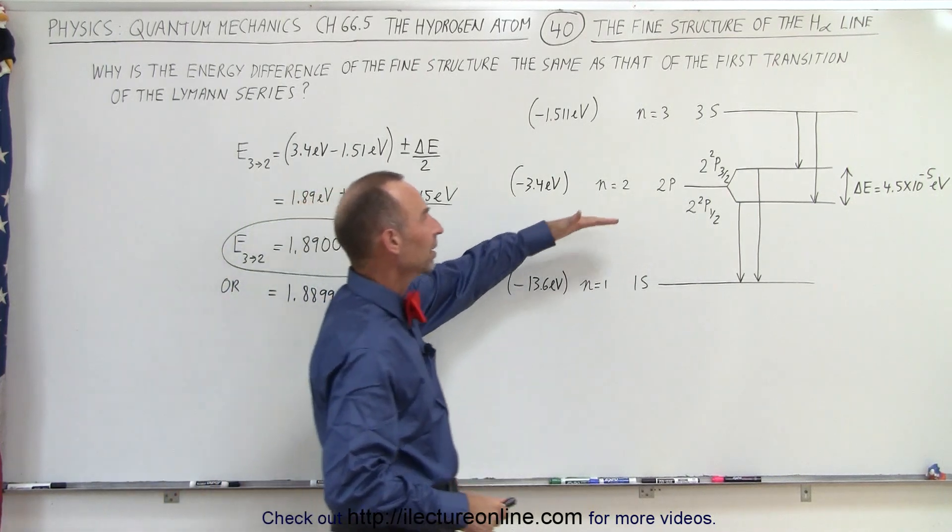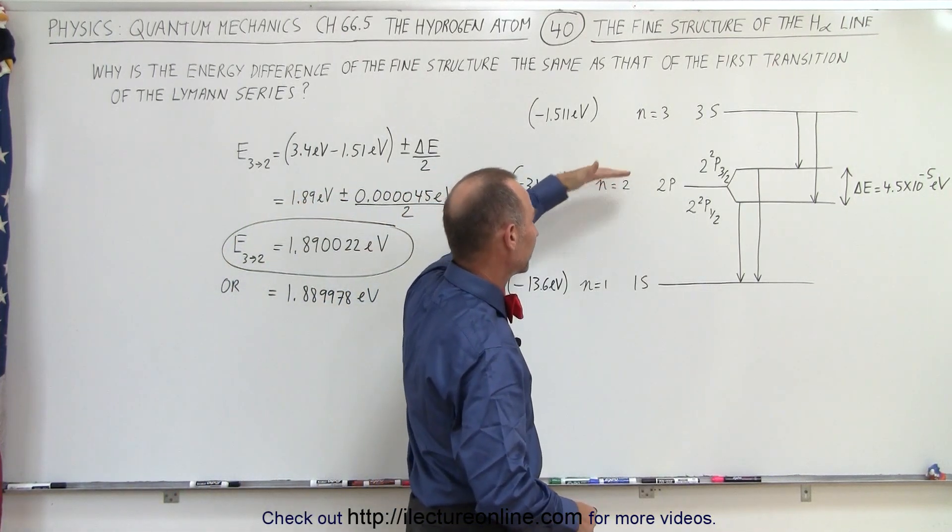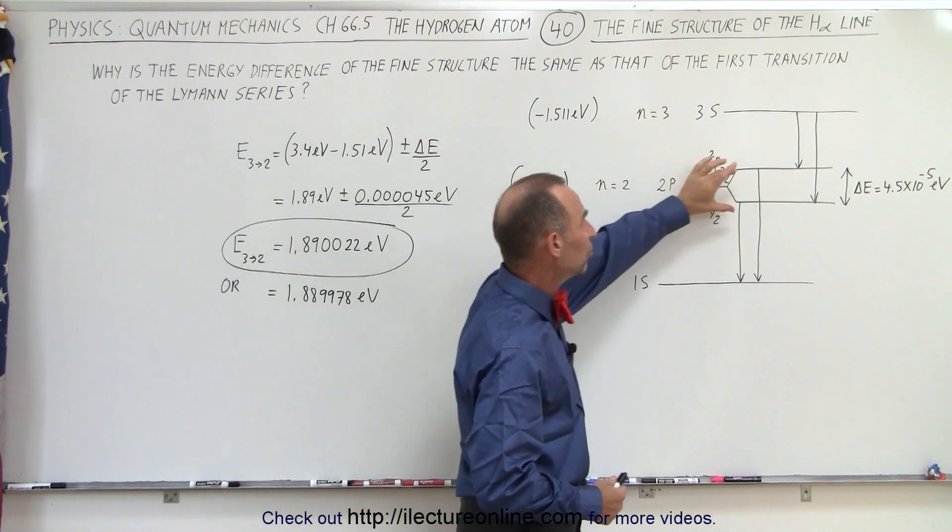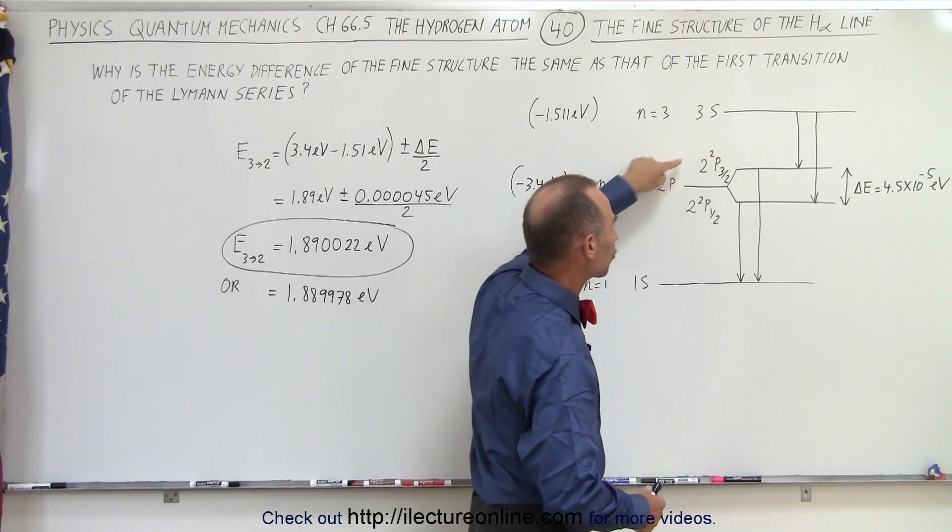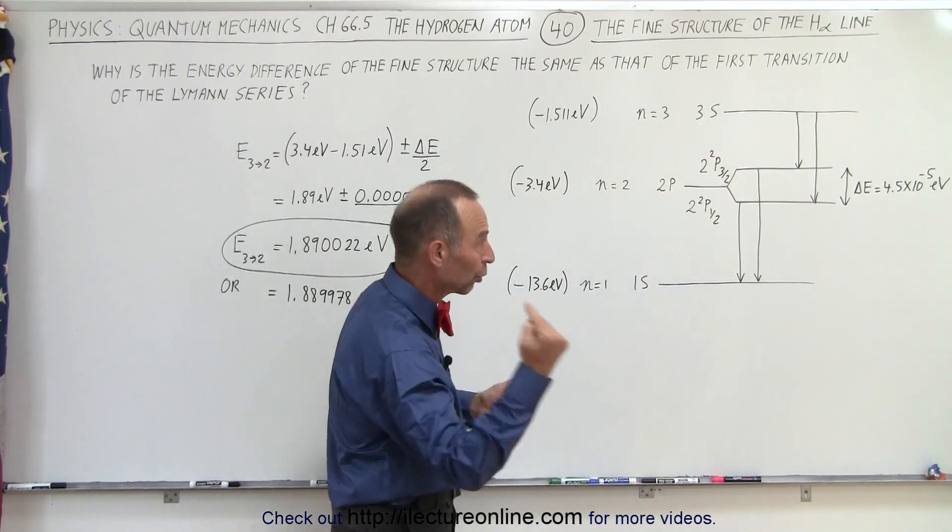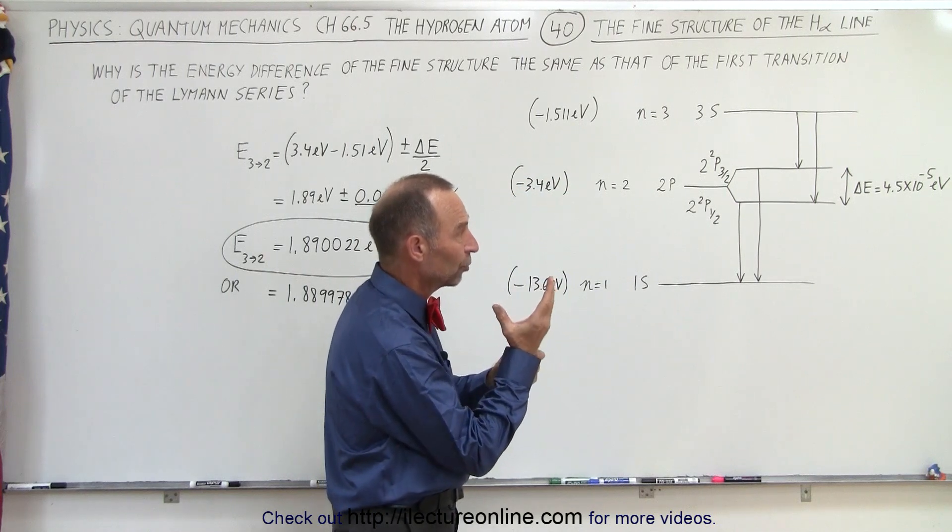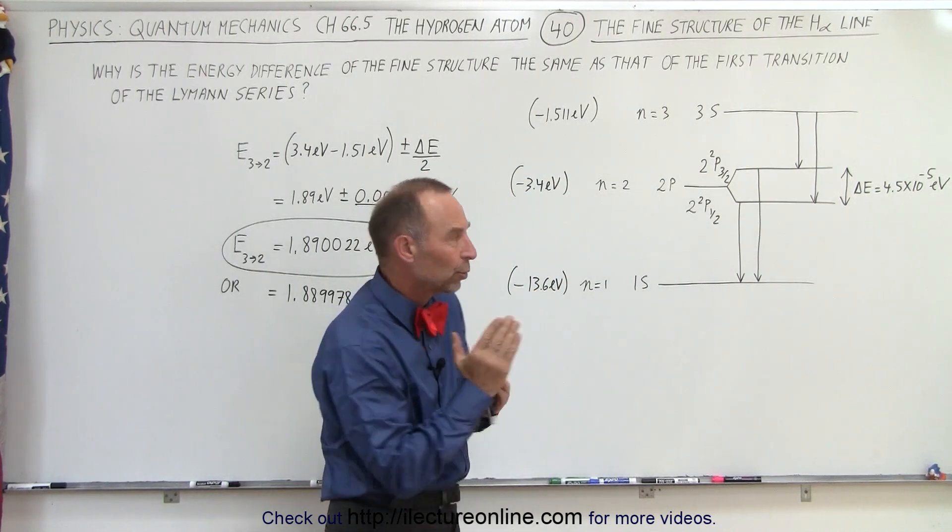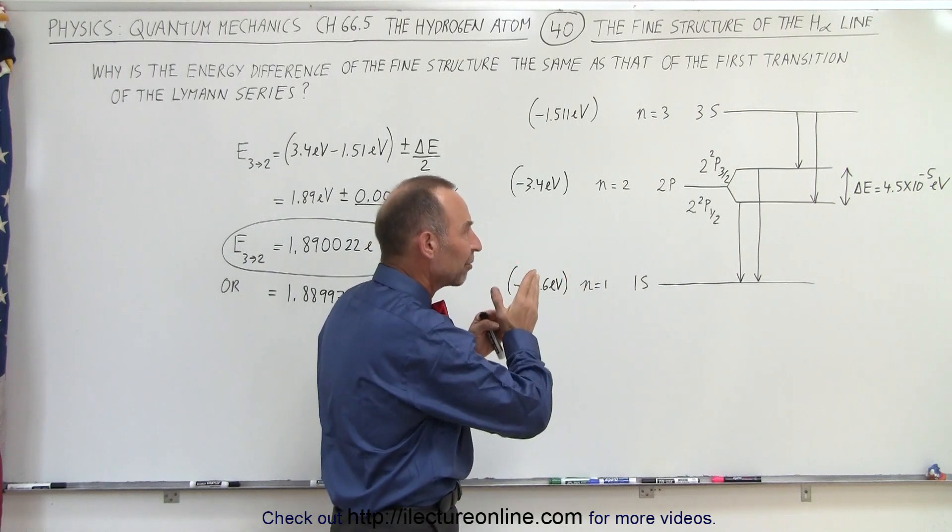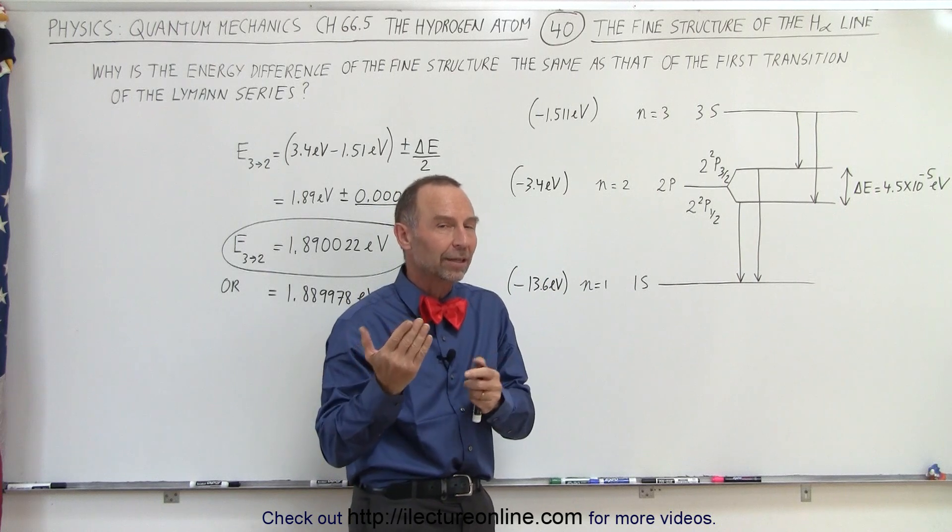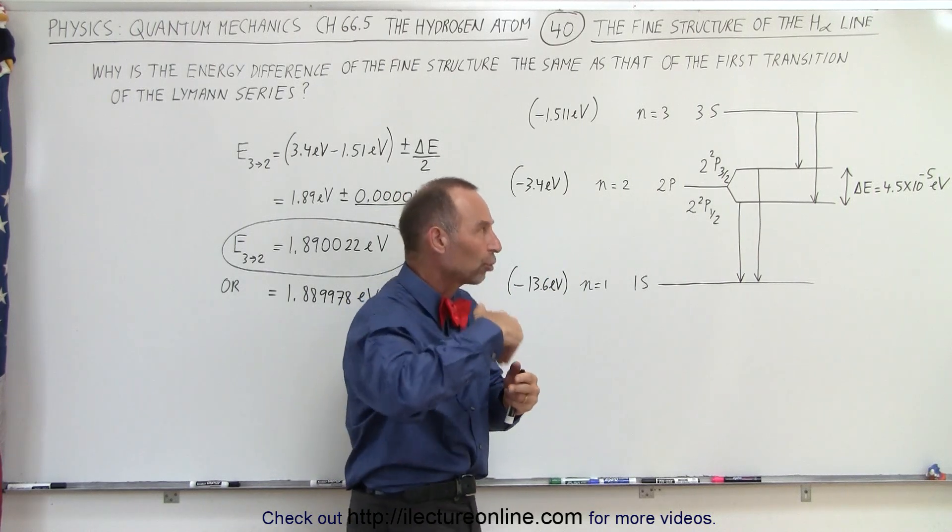The first energy jump in the Lyman series from the second energy level down to the first energy level in the hydrogen atom experiences energy difference because of the fine line structure of the 2p orbital. In the 2p orbitals when the electron orbits the nucleus there's a magnetic field created and the interaction between the spin direction and the magnetic field causes that slight difference in the energy depending upon whether the electron is spin up or spin down.